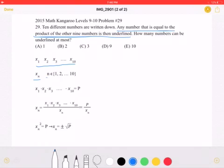So, n must be any number between one and ten. And so, we know that the product of the ten numbers will be x1 times x2 times x3, and so on, until x10. And we can write this product as being equal to p.